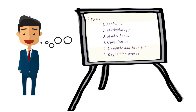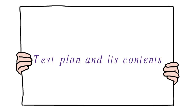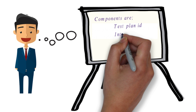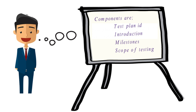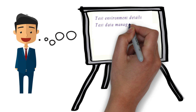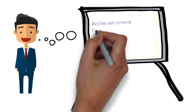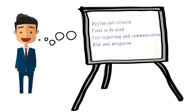So far we have discussed fundamental test process, test strategy, and test approach. Now let's see test plan. Test strategy is the base for everything and the test plan draws its content from the test strategy. Software testing progresses based on what is written in the test plan. The main components of a test plan are: test plan ID, introduction, milestones, scope of testing (features to be tested and features not to be tested), test environment details, test data management, test management process, defect tracking methods, roles and responsibilities, entry and exit criteria, tools to be used, test reporting and communication, and risk and mitigation.